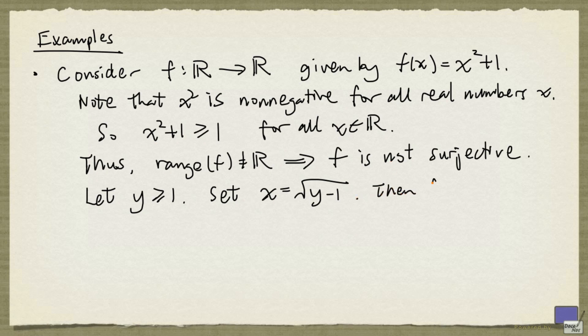And with this x, f(x) will be the square of √(y-1) all squared plus 1. And that gives you y - 1 + 1. And that's equal to y. So the output of f can be any value at least 1.